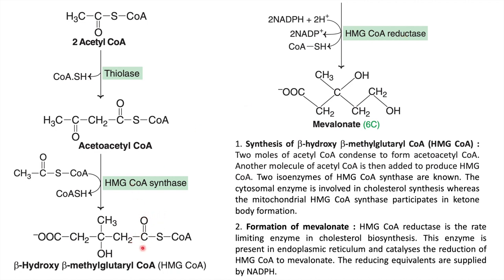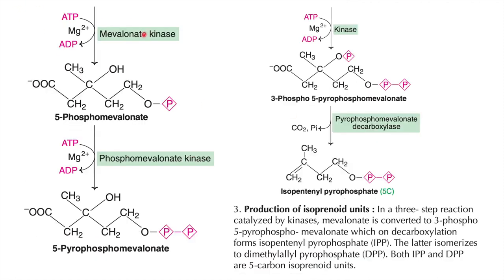The reduction produces mevalonate, a six-carbon unit. This mevalonate then gets phosphorylated by the enzyme mevalonate kinase. ATP is converted to ADP, meaning adenosine triphosphate donates one phosphate group to mevalonate. The hydroxyl group of mevalonate gets phosphorylated to give 5-phosphomevalonate.